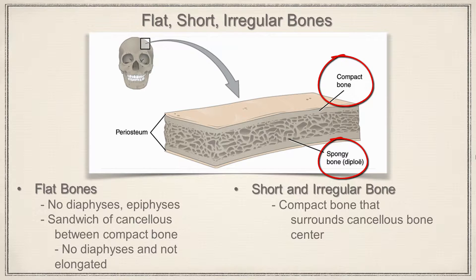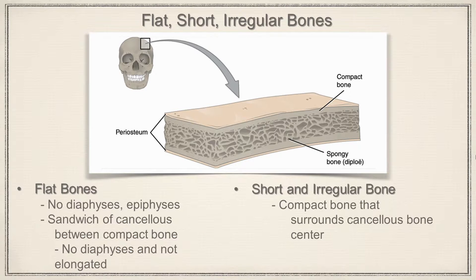There is no diaphysis, no shaft, so it is not going to be elongated — it's more like a sheet. We're going to find this in areas of the skull, the ribs, the sternum, and your shoulder blade. Those are going to be flat bones.